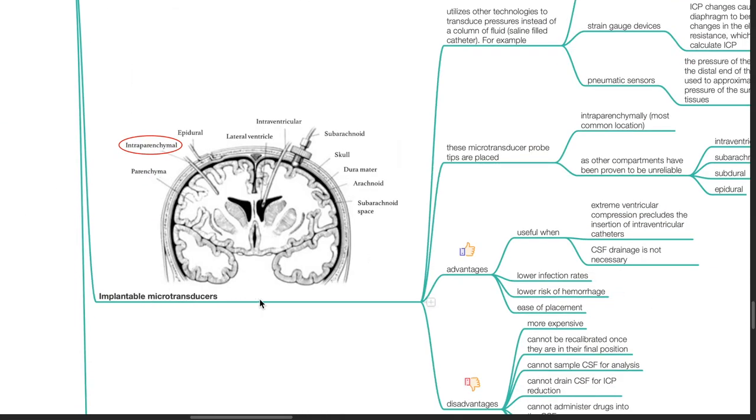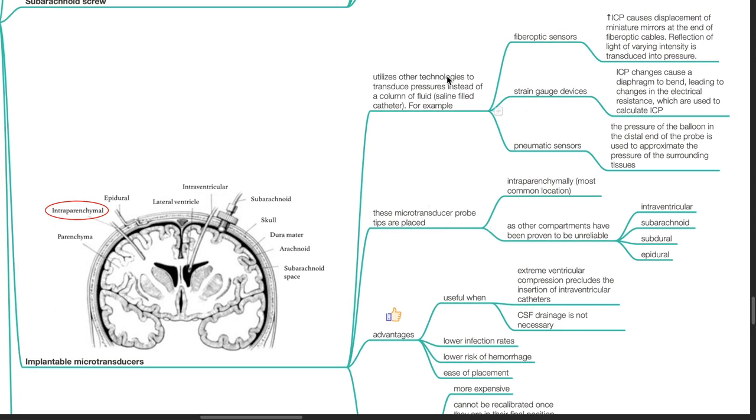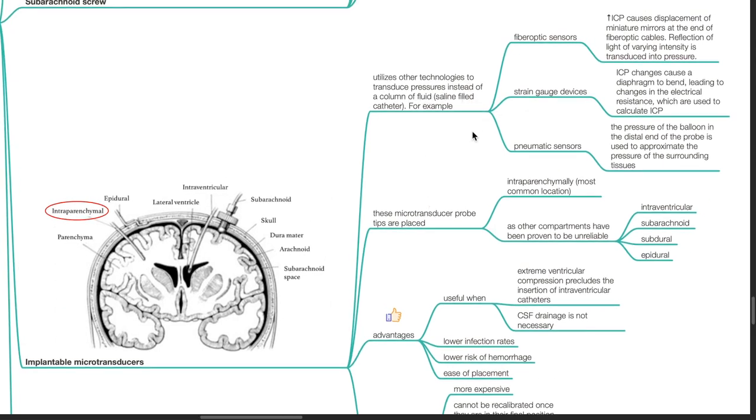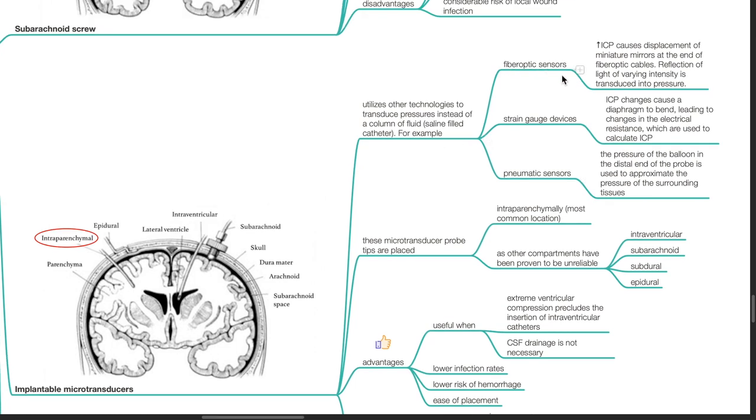Implantable microtransducers. It utilizes other technologies to transduce pressures instead of a column of fluid. For example, fiber optic sensors, strain gauge devices, and pneumatic sensors. Fiber optic sensors: raised ICP causes displacement of miniature mirrors at the end of fiber optic cables. Reflection of light of varying intensity is transduced into pressure. Strain gauge devices: ICP changes cause a diaphragm to bend leading to changes in electrical resistance which are used to calculate ICP. Pneumatic sensors: the pressure of the balloon in the distal end of the probe is used to approximate the pressure of the surrounding tissues.